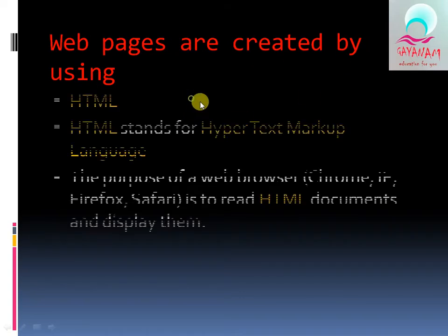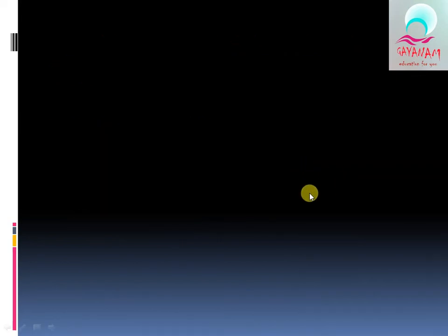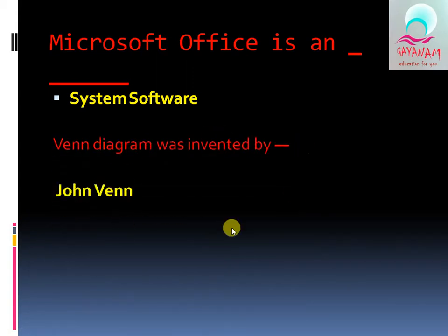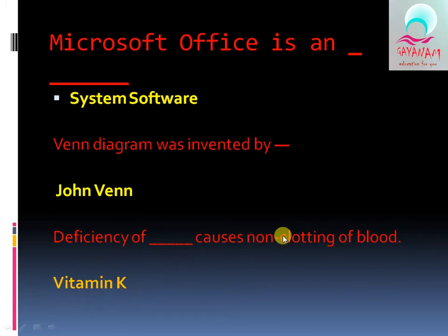Web pages are created using HTML, which stands for Hypertext Markup Language. The purpose of a web browser — such as Chrome or Firefox — is to display web pages. Microsoft Office is system software.